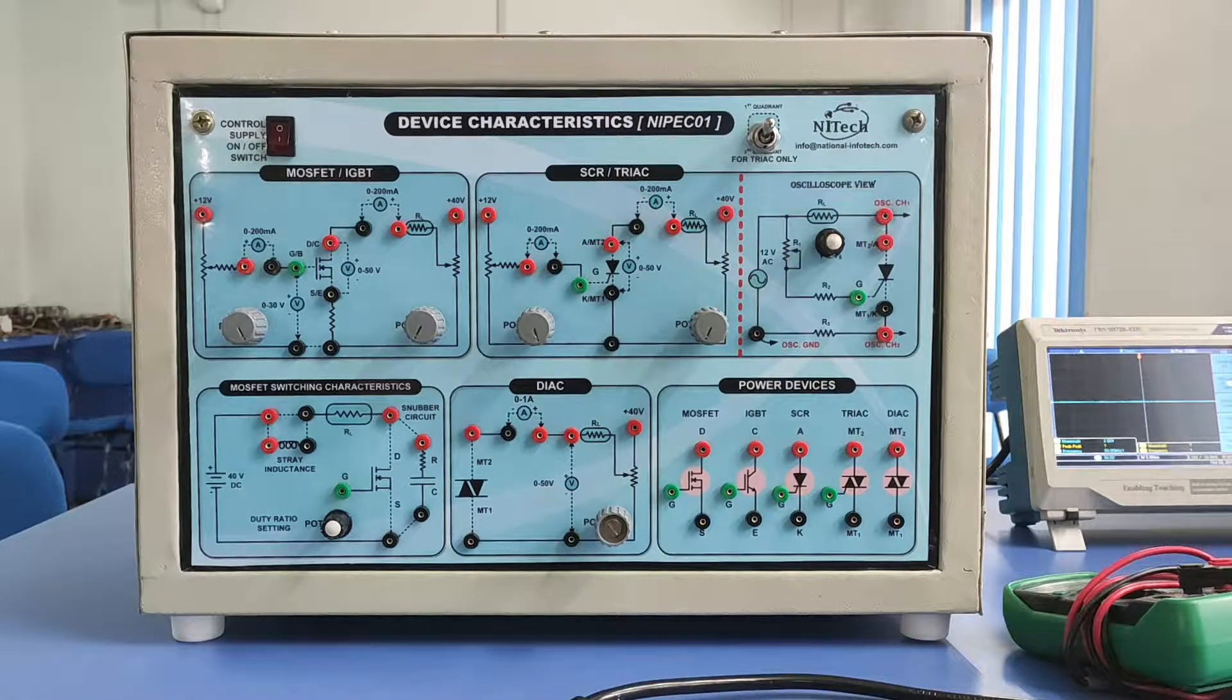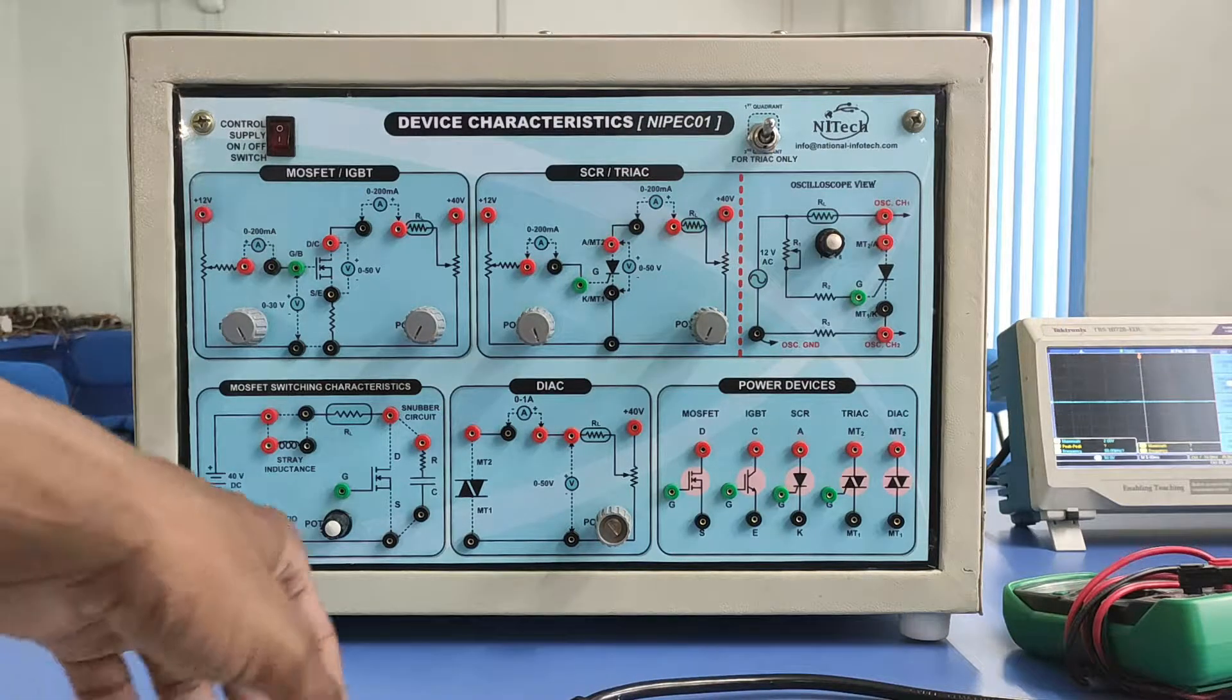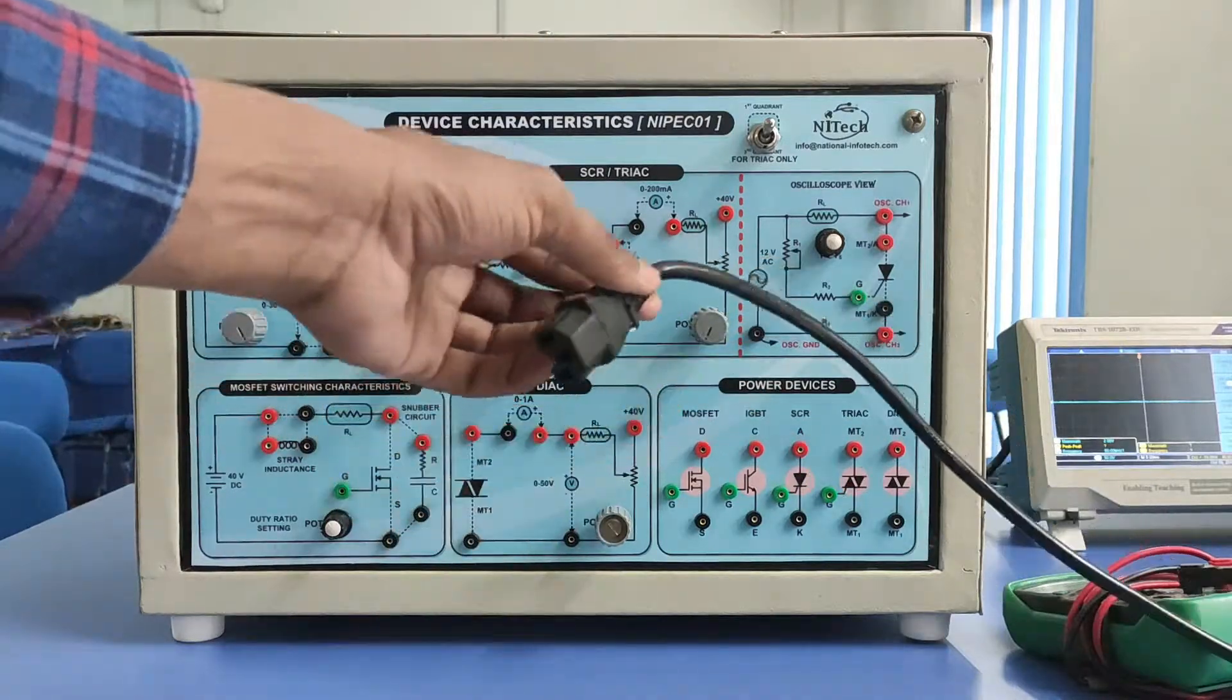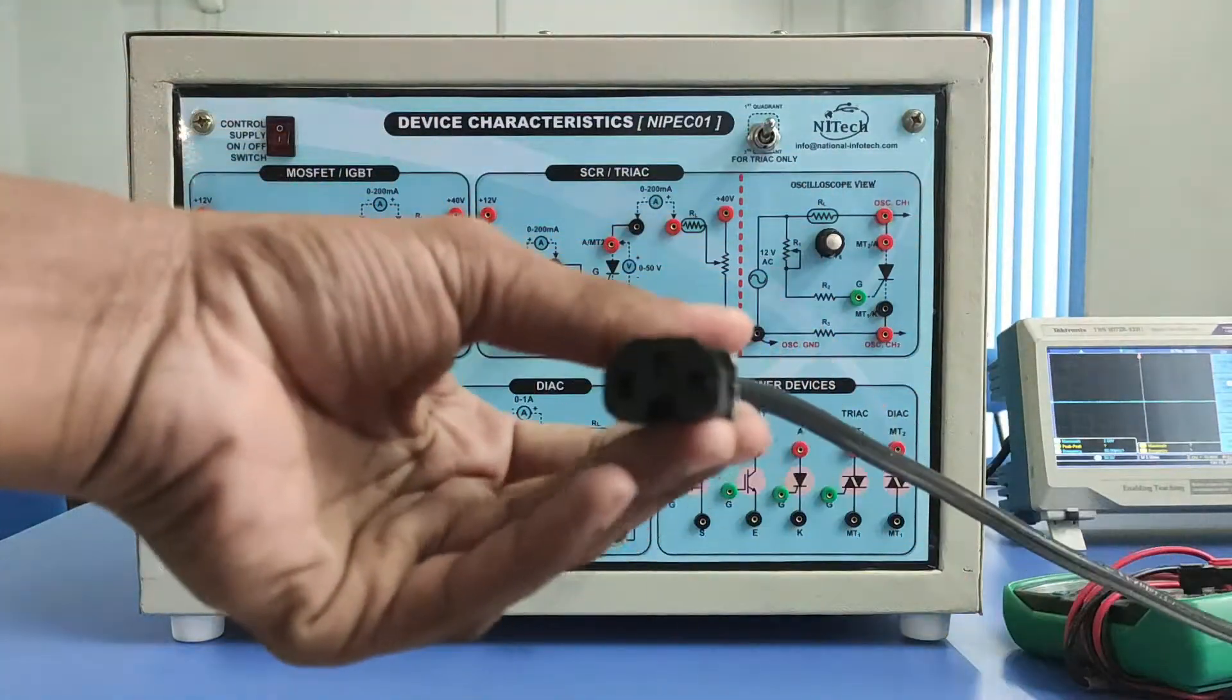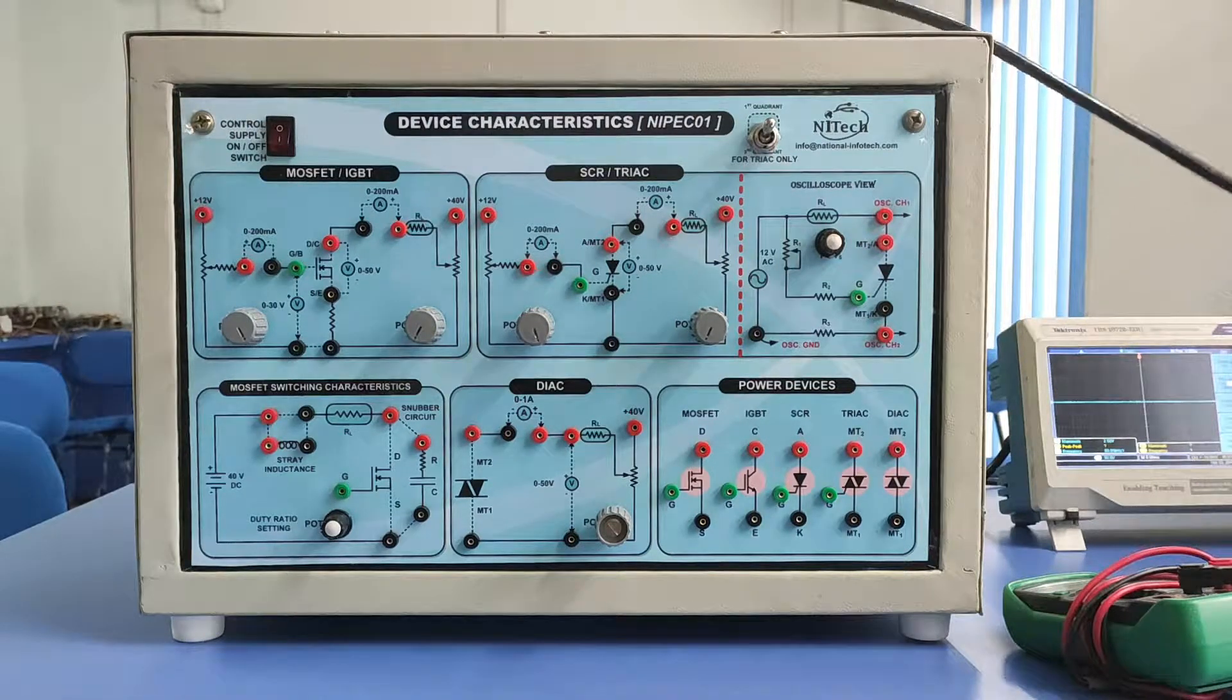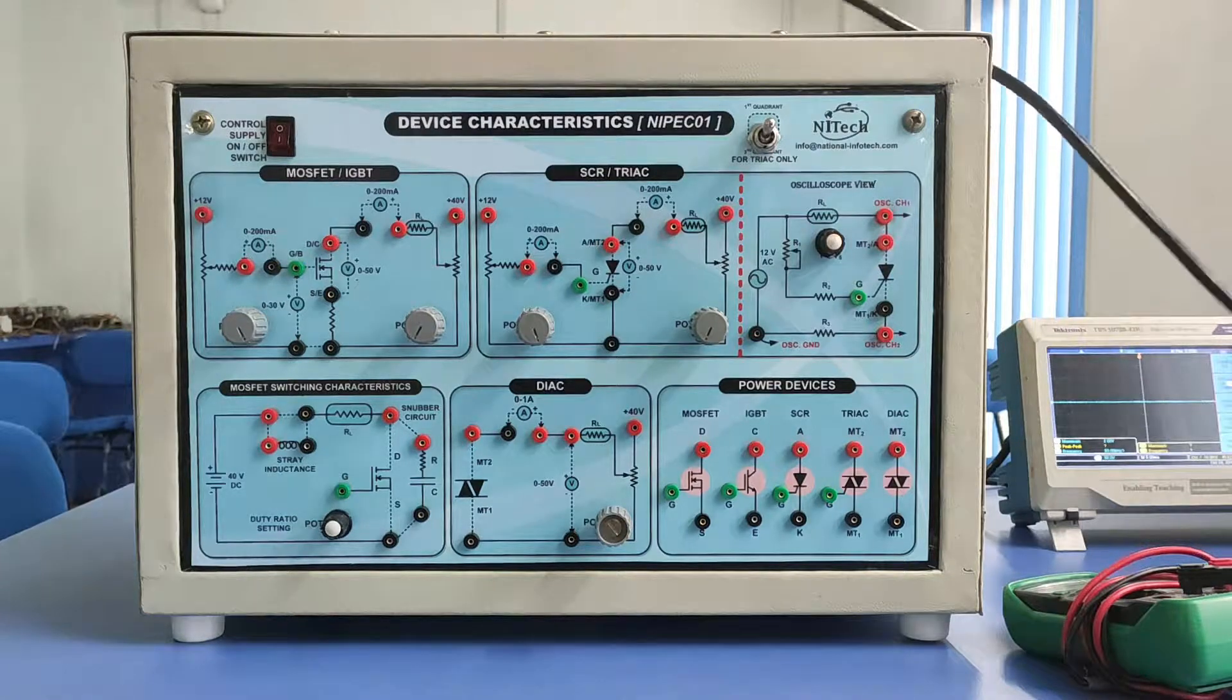It is in off condition right now. You can make it on by connecting this mains cord wire, which is of 230 volt AC. My mains plug is already inserted into the mains line, and this should be connected to the back side of the kit. We are going to connect this mains cord wire.